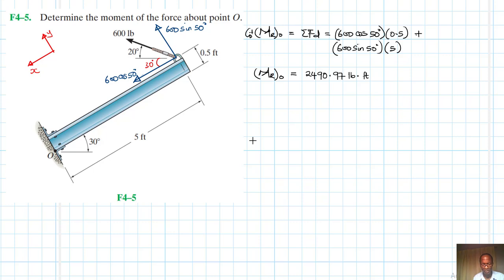We can write it as 2490.97 pounds feet, and this one is anticlockwise. We can show it here, we have the moment in this direction. This one is 2490.97 pounds feet.